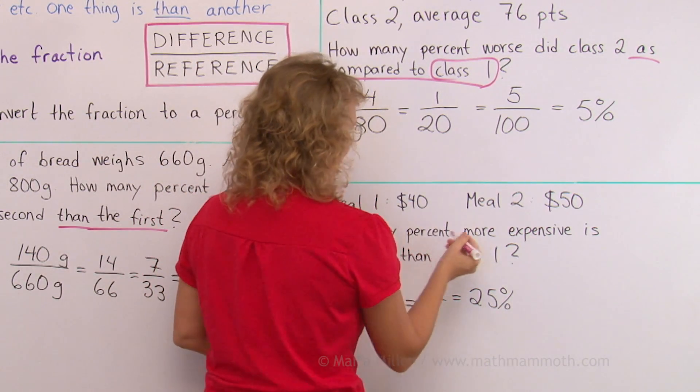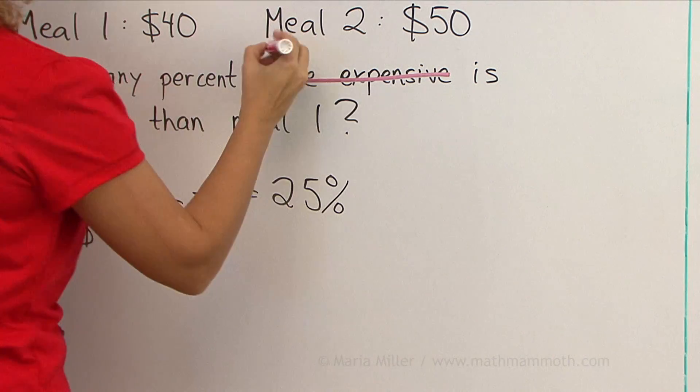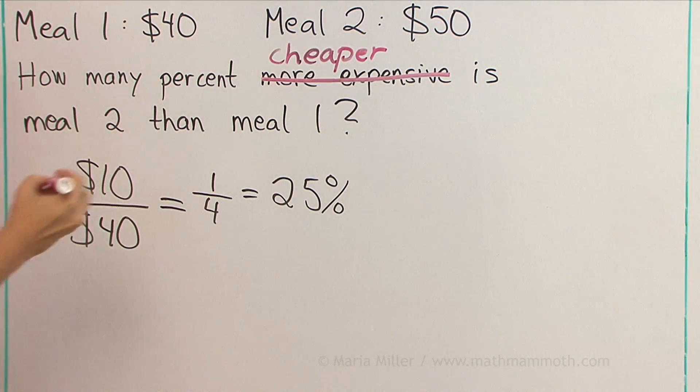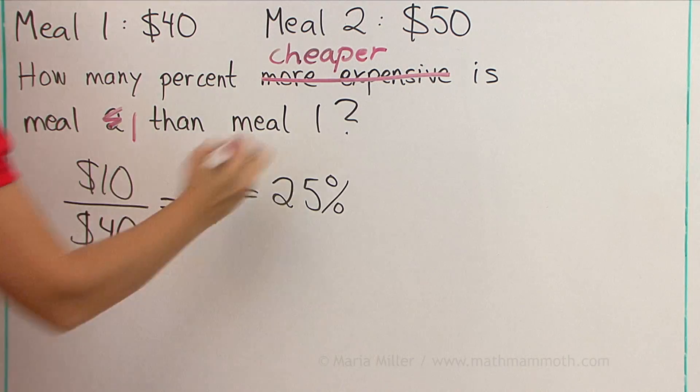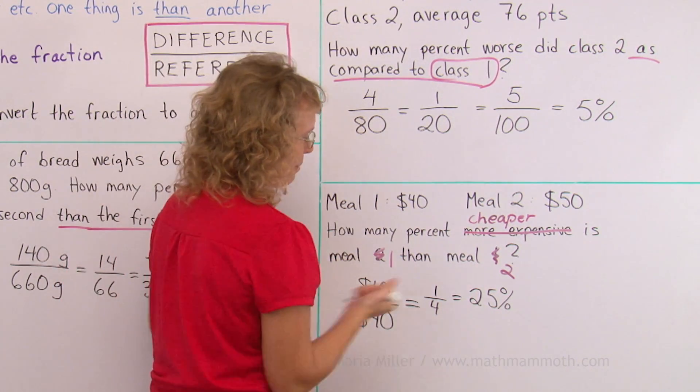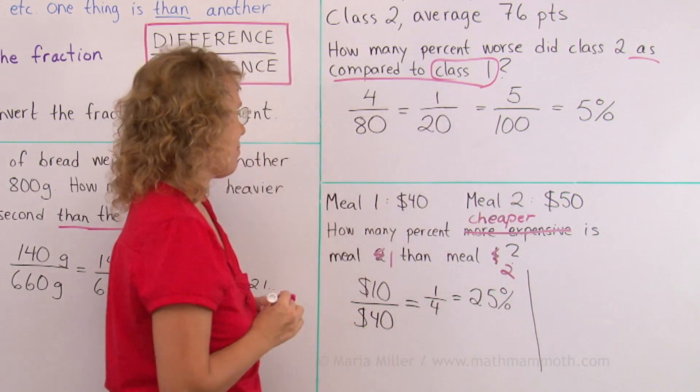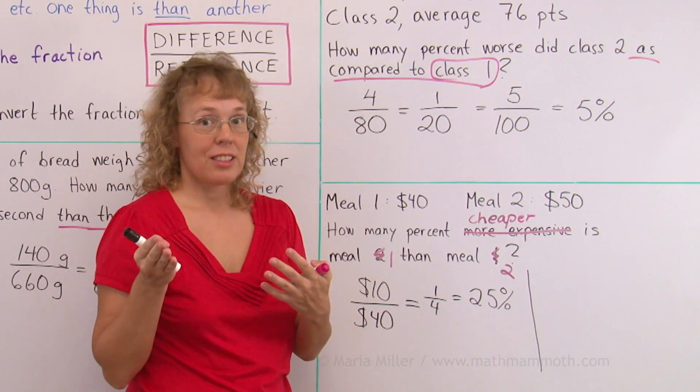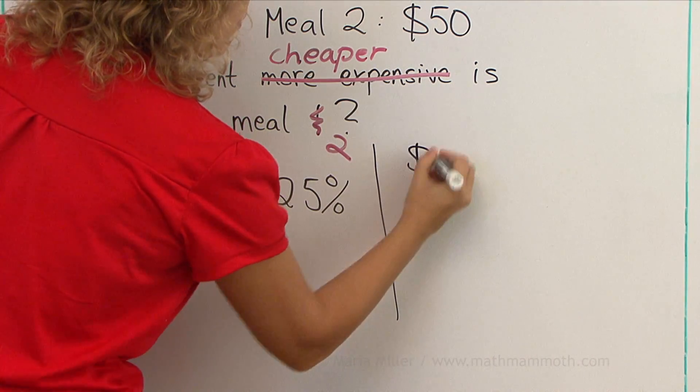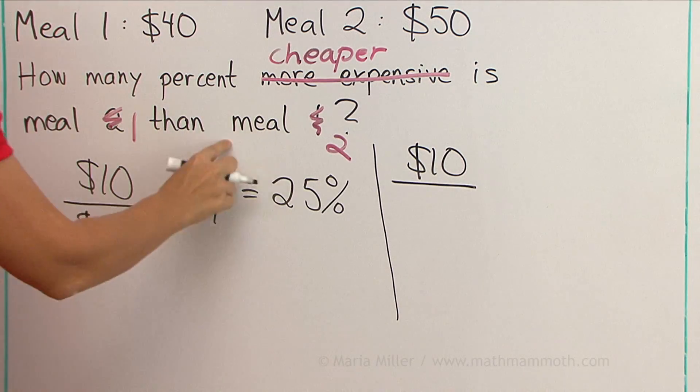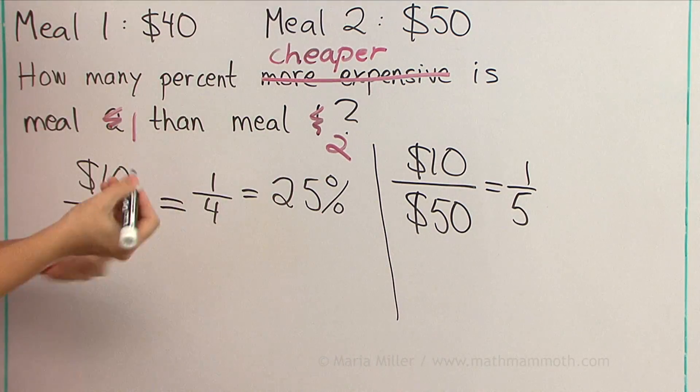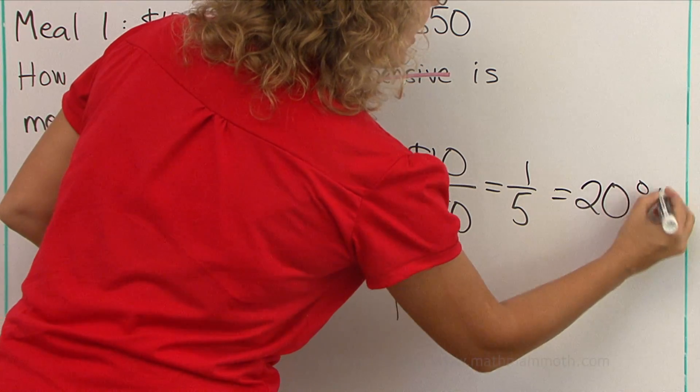So what if it asks how many percent cheaper is meal 1 than meal 2? Just the other way around. Now solve it. This time the difference is the same, right? The difference in prices is 10 dollars. It is 10 dollars cheaper. We compare that to the price of meal 2, 50 dollars. So we get 1 fifth. It is 1 fifth cheaper, which is of course 20%.